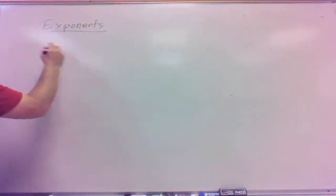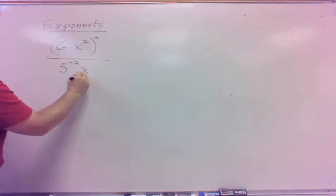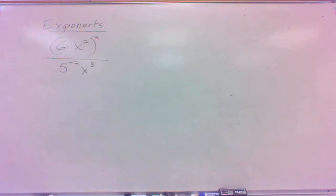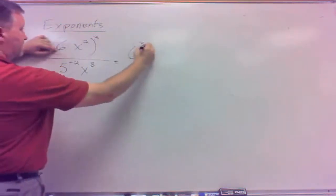If I have 6x squared to the third divided by 5 to the negative 2x to the eighth, and I want to simplify such a thing. The exponent on the top there needs to be put with the 6 and the x squared.